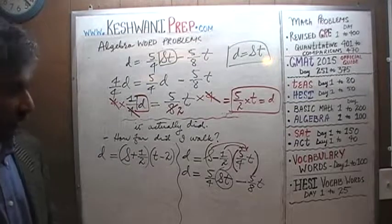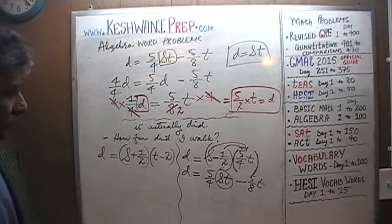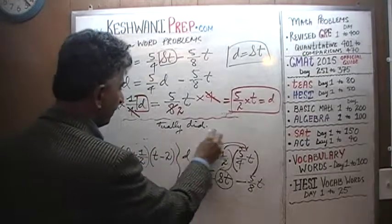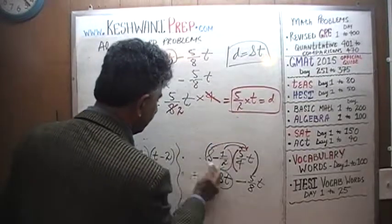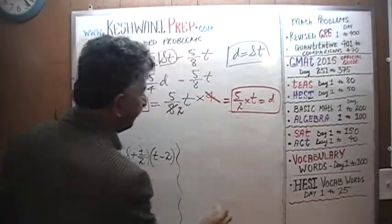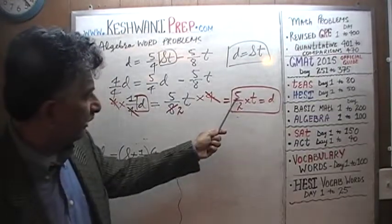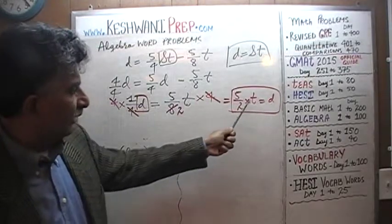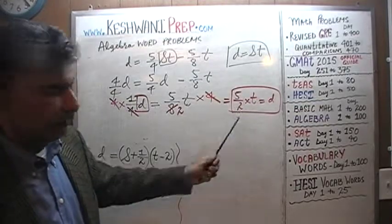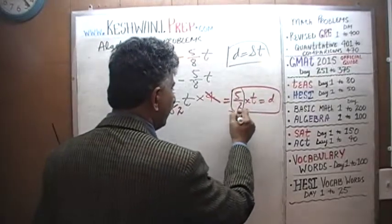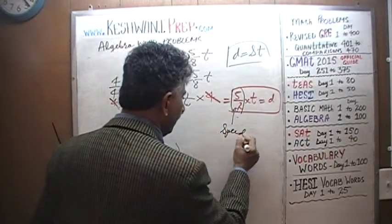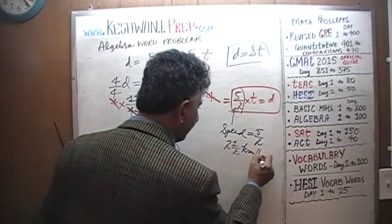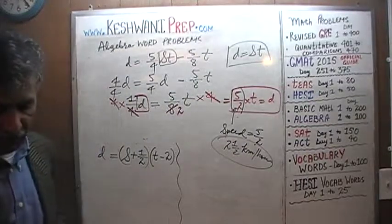Are you with me? It's important you stay with the story. Now: d equals five-over-two times t. The distance equals some coefficient times time. What do you suppose that five-over-two is? This is the distance, this is the time — so five-over-two must be our speed. Five-over-two equals two and a half. We are going at two and a half kilometers per hour.